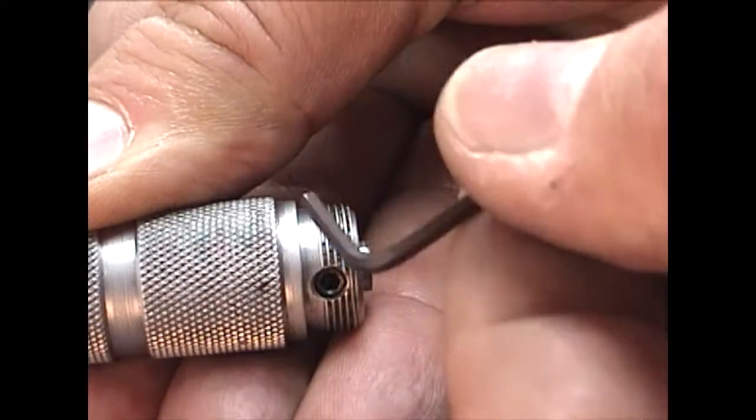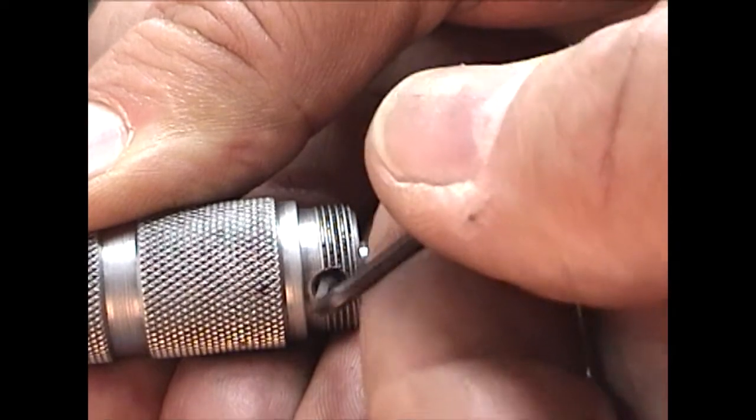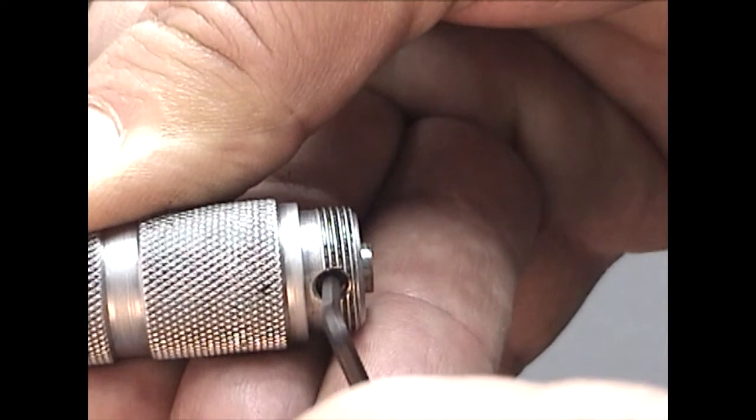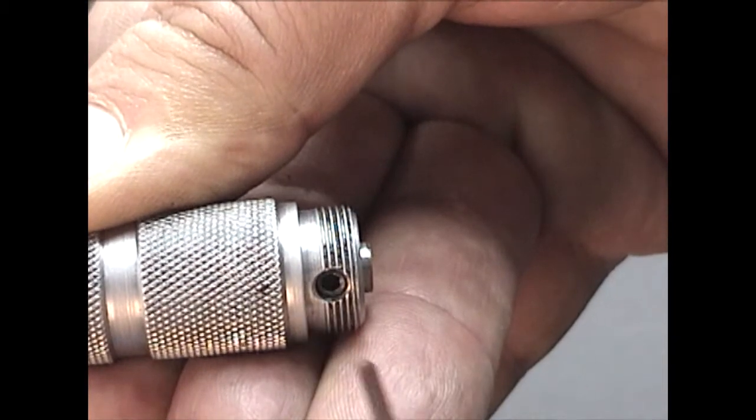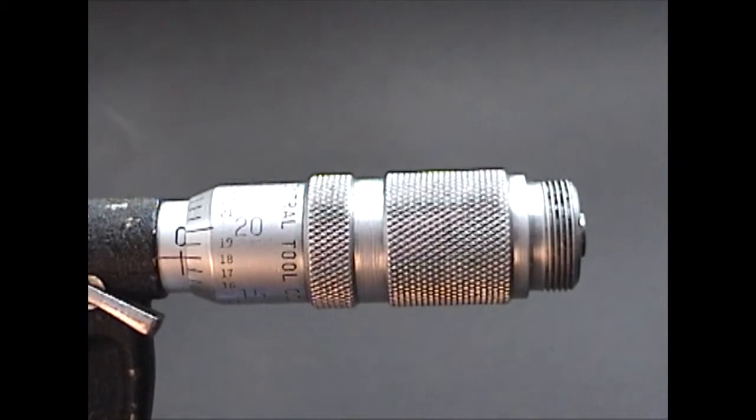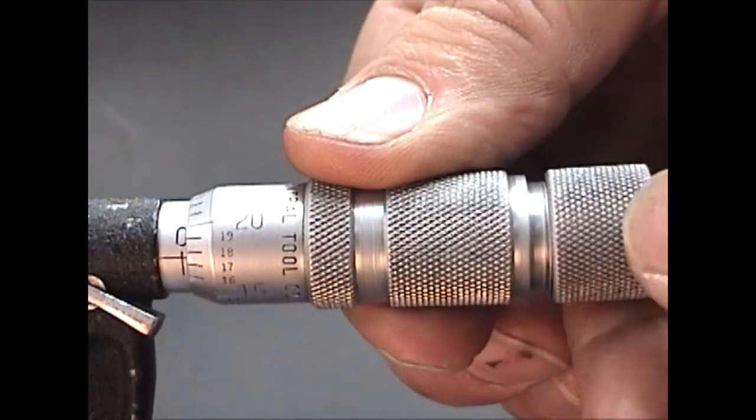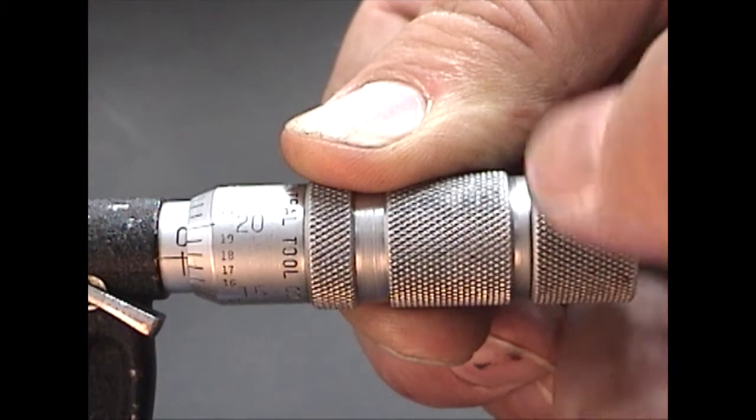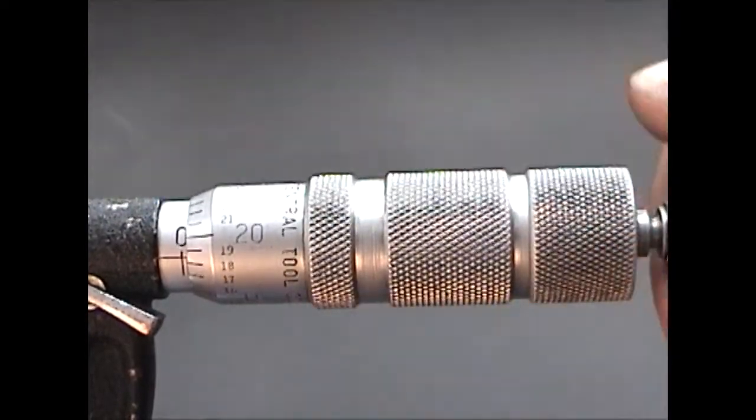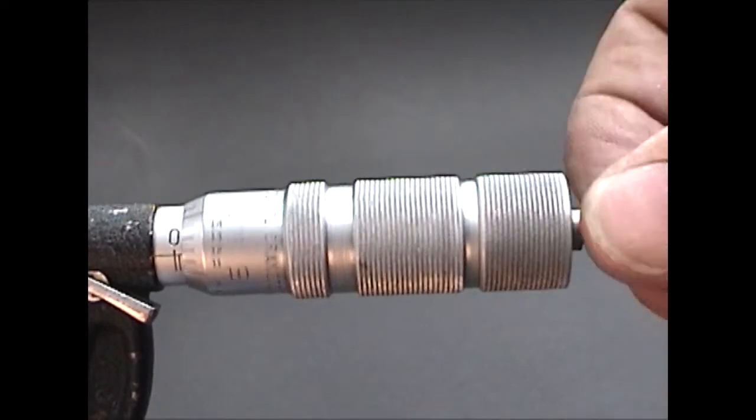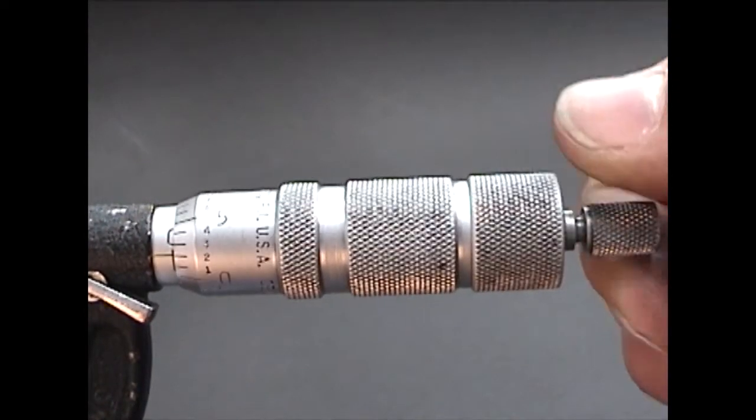Fully tighten the set screw so the thimble won't move. Install the ratchet cap. Check the calibration once more with the thumb ratchet.